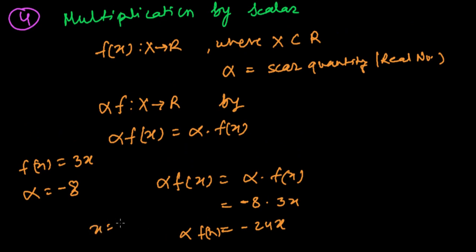And if x equals 2, then what will happen? Alpha f(2) equals minus 24 times 2, which is minus 48. That will be our answer.